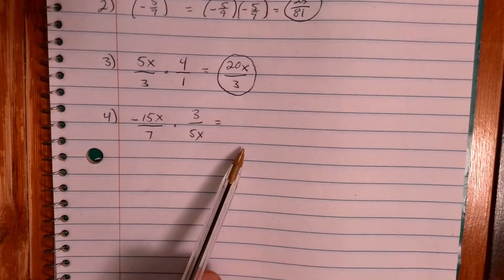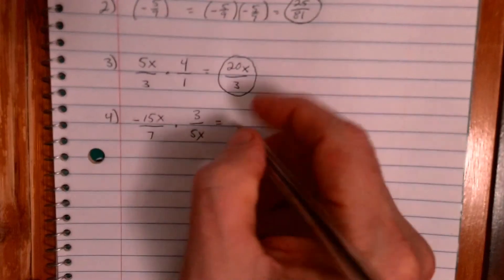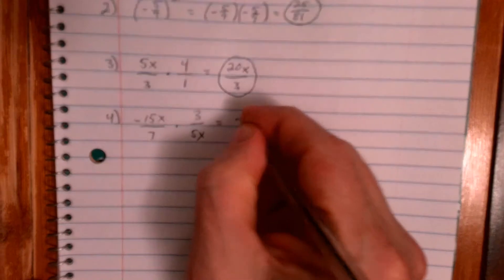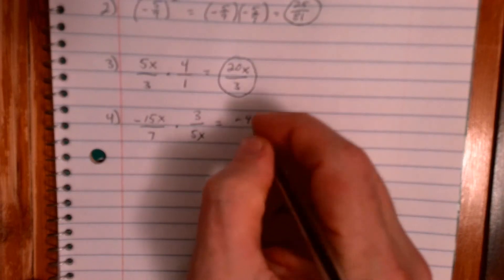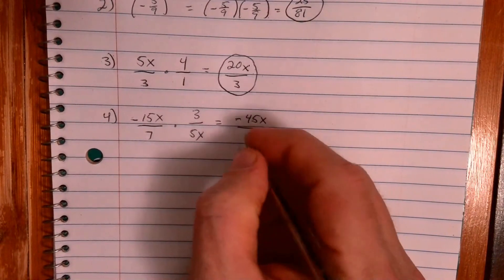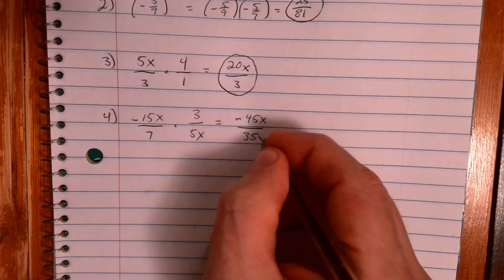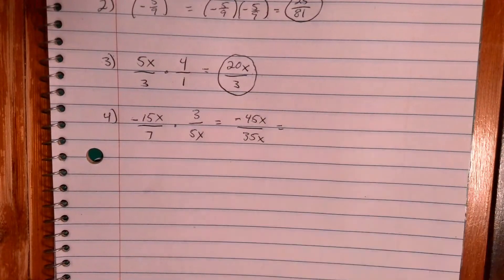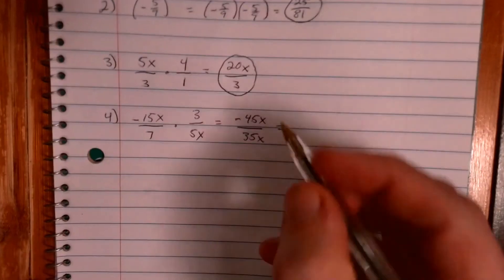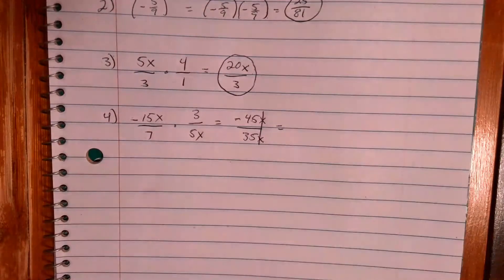And let's just show that. Okay, let's just show it a couple ways actually. Let's do it this way. So we have negative 45x, that's just multiplying straight across, I'm not going to cancel anything here, over 35x.